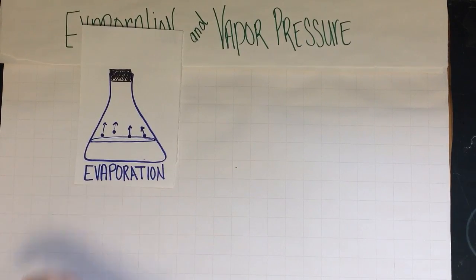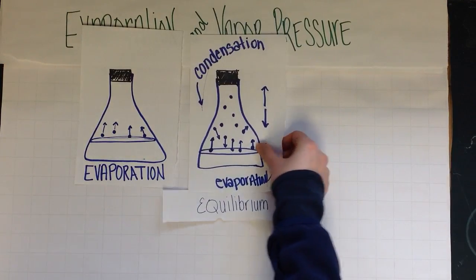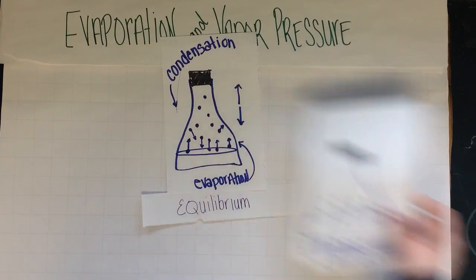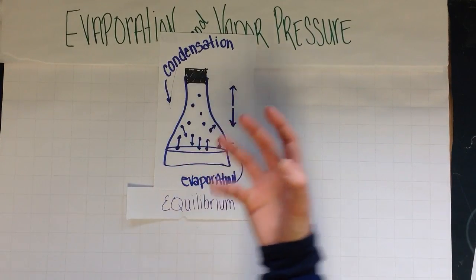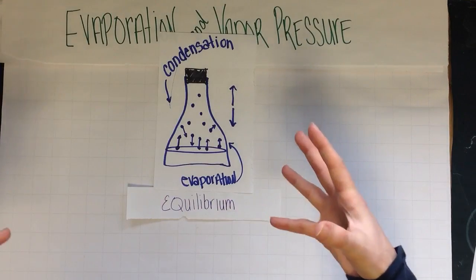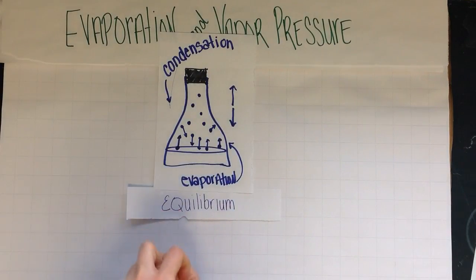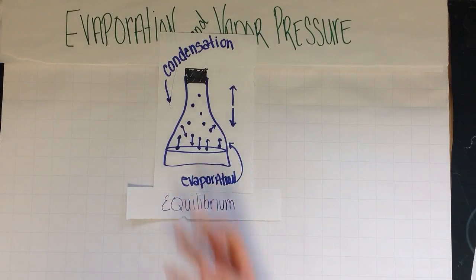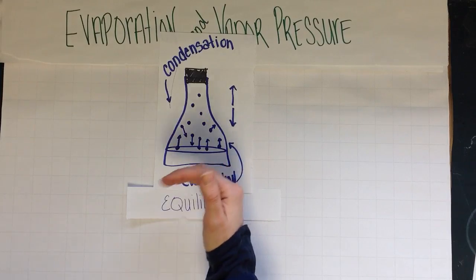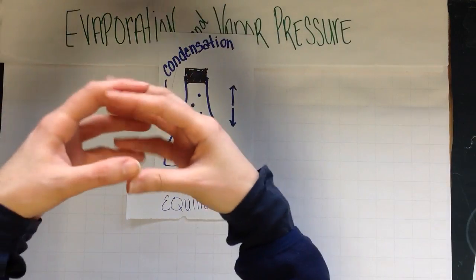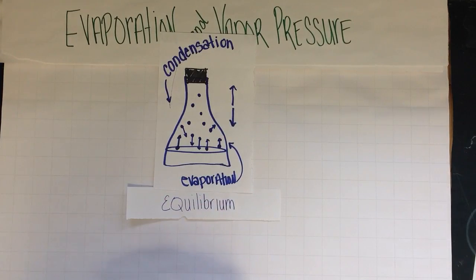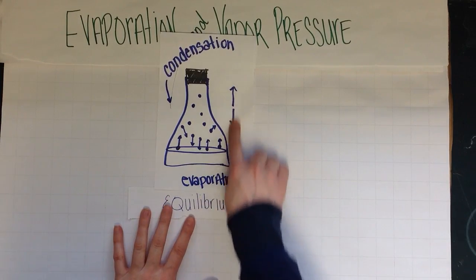At first it appears that we have a lot more evaporation happening. But eventually these molecules will realize that the container has been sealed off, and so they'll have nowhere else to go but to collide and hit each other and come back together, which is called condensation, and fall back down into the liquid. Eventually, the rate at which molecules are leaving the surface and condensing back into a liquid — that rate equals out.